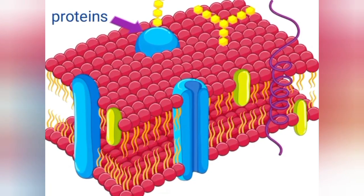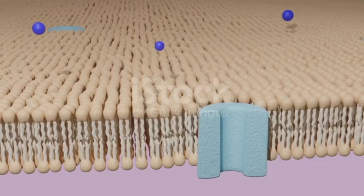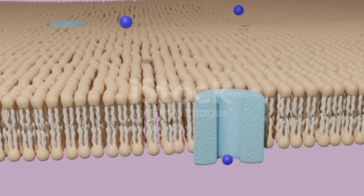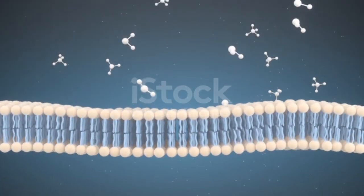Function: The main function of the plasma membrane is to regulate the passage of substances in and out of the cell. It controls the movement of ions, nutrients, waste products, and other molecules to maintain cellular homeostasis.